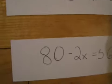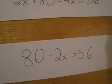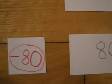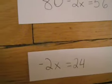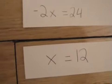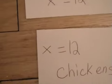To get the X alone, we subtract 80 from each side, and you get negative 2X equals 24. We divide by negative 2 on each side, giving us X equals 12. So the answer is X equals 12.